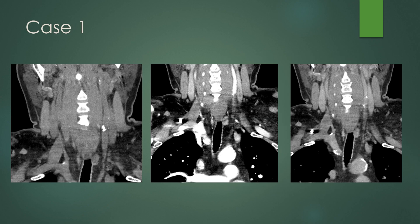Now here is a practice case. We have the non-contrast coronal, the arterial phase coronal, and the venous phase coronal. If you look in that retro-thyroidal region, you can see a nice oval-shaped hypodense nodule. On the arterial phase, you can see it is enhancing with contrast, and on the venous phase, you can see there is some washout of the contrast. This is more of a classic appearance of a parathyroid adenoma.